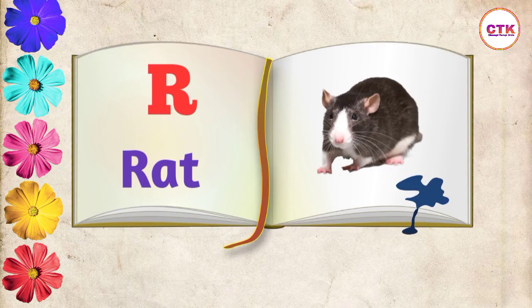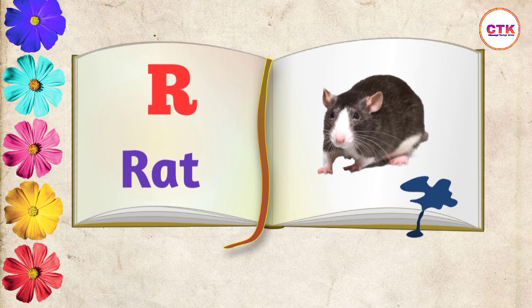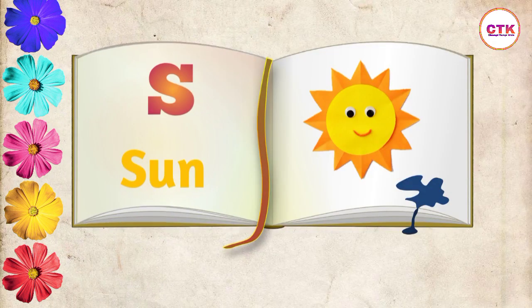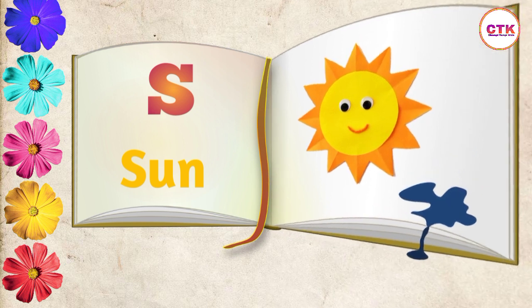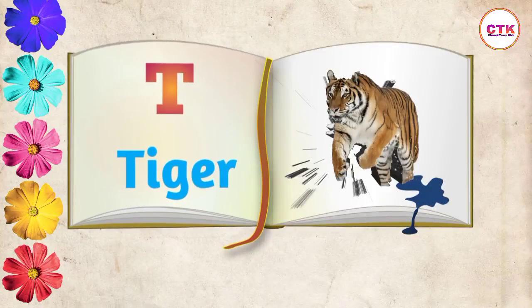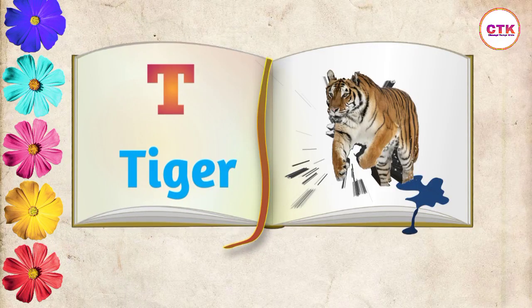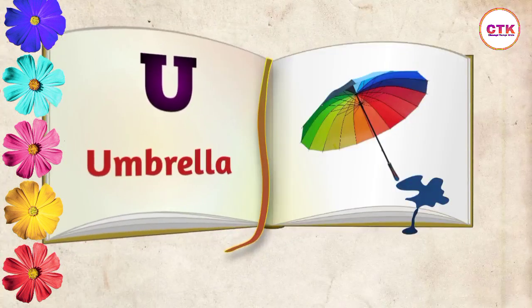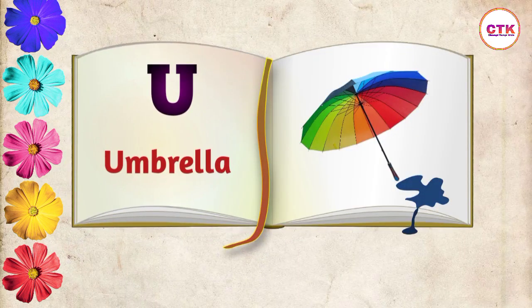R, R for Red. S, S for Sun. T, T for Tiger. U, U for Umbrella.